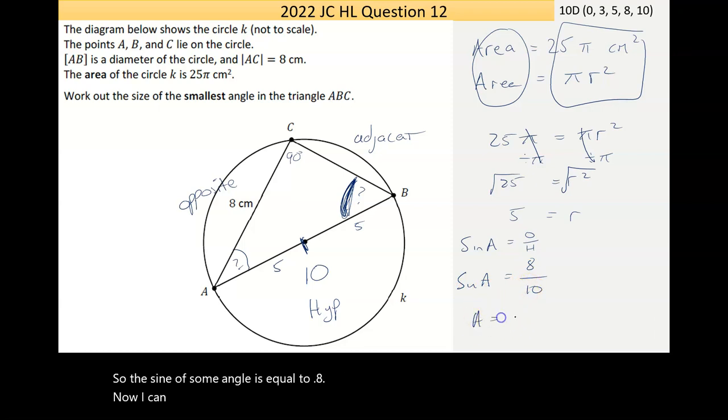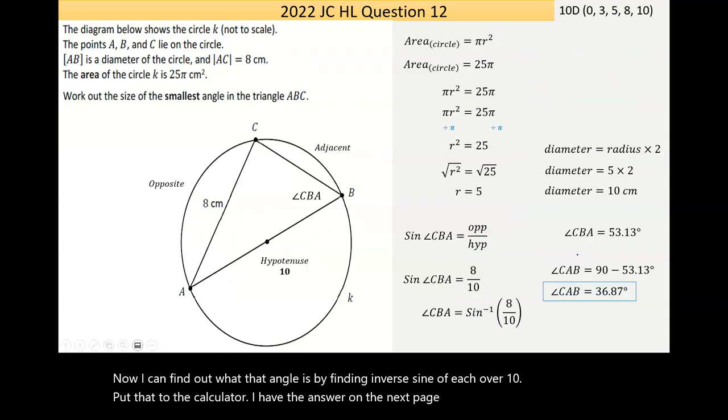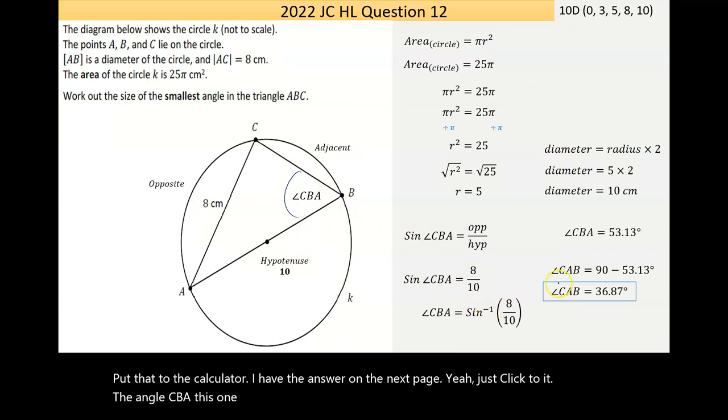And I do know the hypotenuse is 10. So the sine of some angle is equal to 0.8. Now, I can find out what that angle is by finding inverse sine of 8 over 10. Now, put that to the calculator. I have the answer on the next page. I'll just flick to it. The angle CBA, this one here, is equal to 53.13.